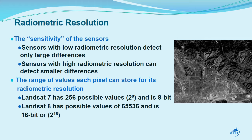Radiometric sensitivity is very important. Low radiometric resolution means fewer brightness values per pixel; high radiometric resolution can detect much smaller differences. Even though Landsat 7 and Landsat 8 both have 30-meter pixels, Landsat 7 has 256 possible brightness values while Landsat 8 can have about 65,000. This doesn't mean you can identify smaller objects, but your computer can detect more subtle differences between pixels even when your eyes cannot.